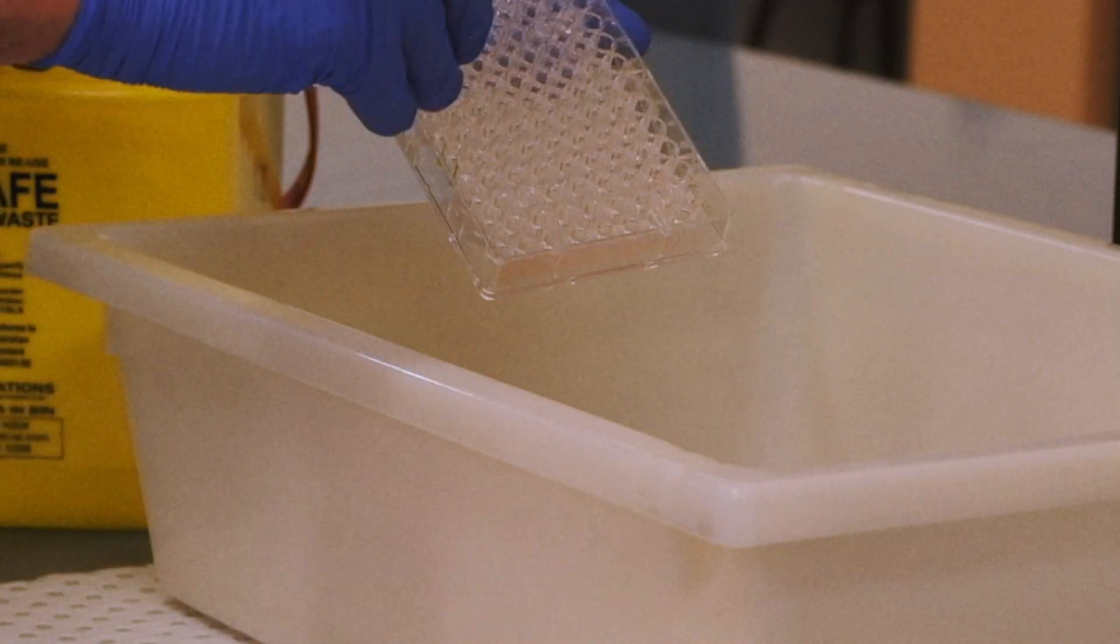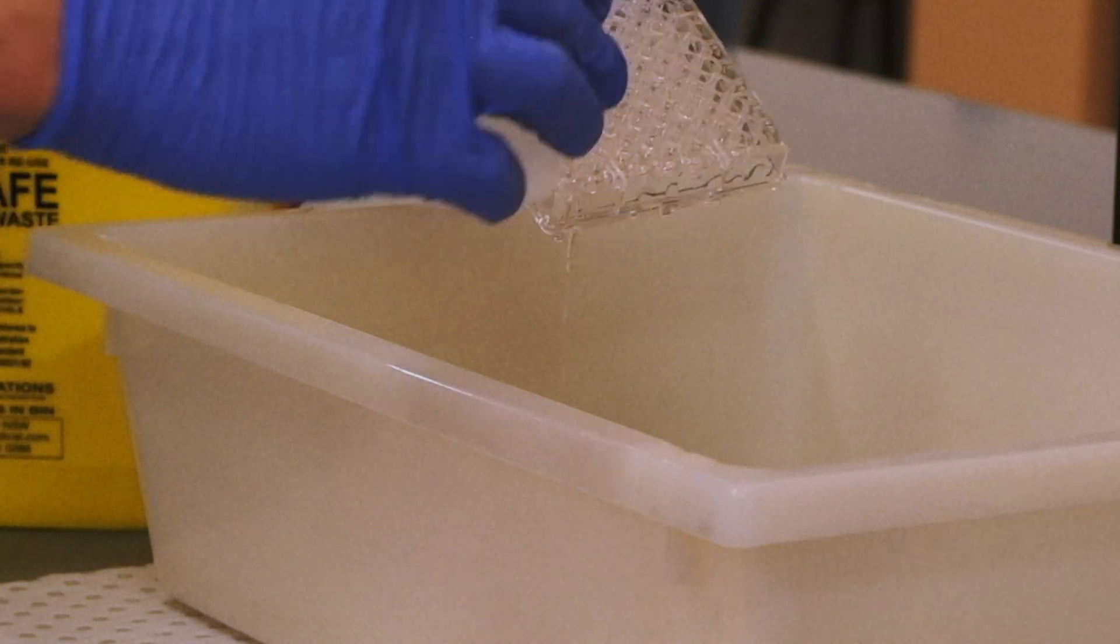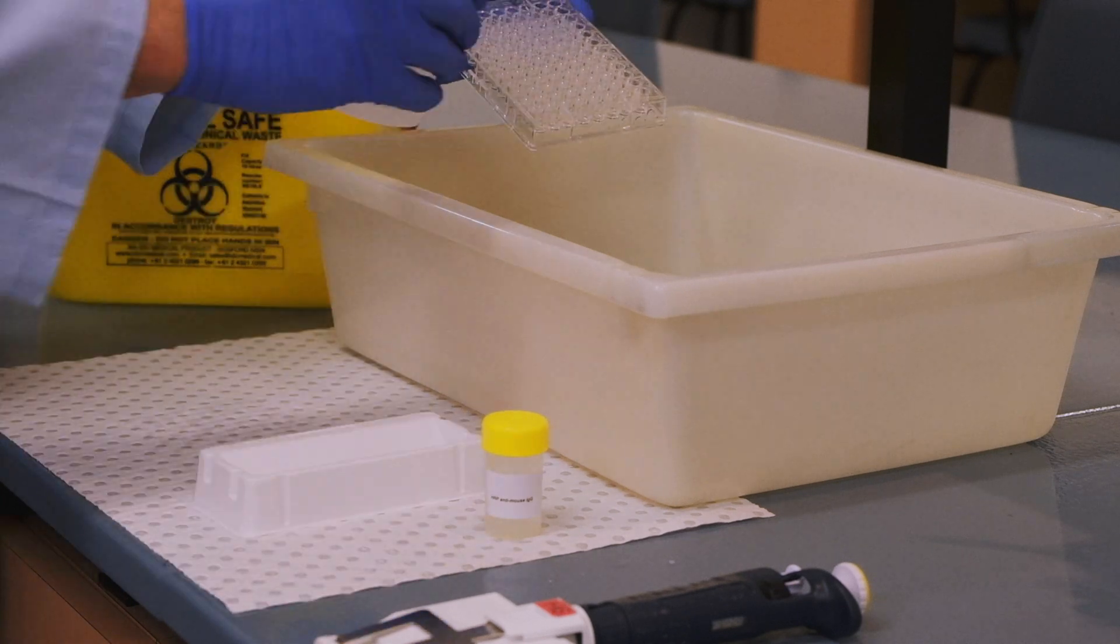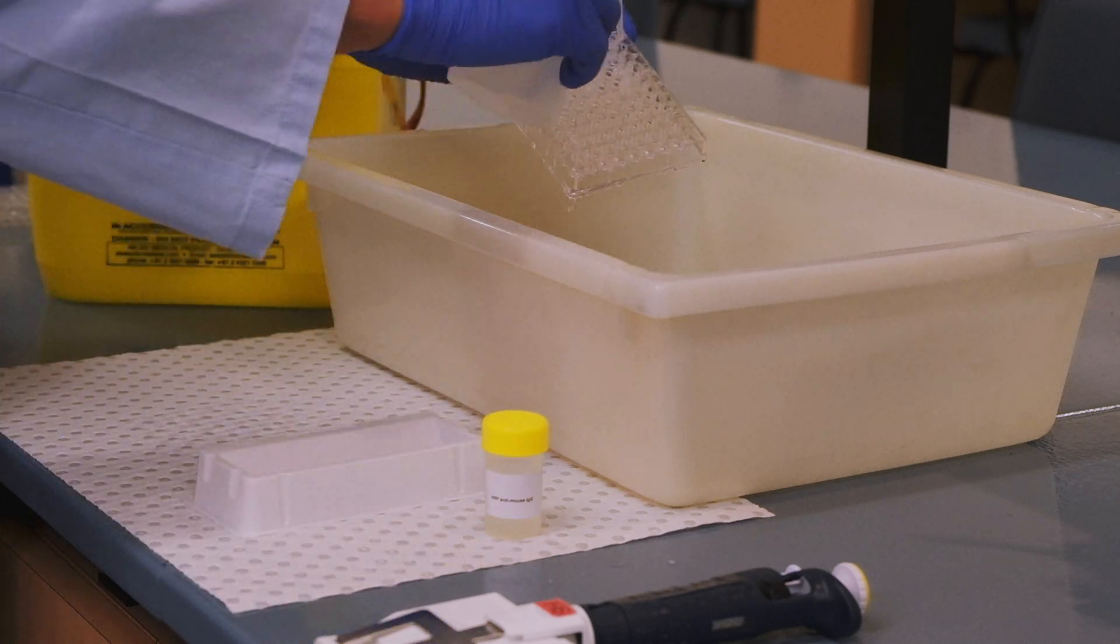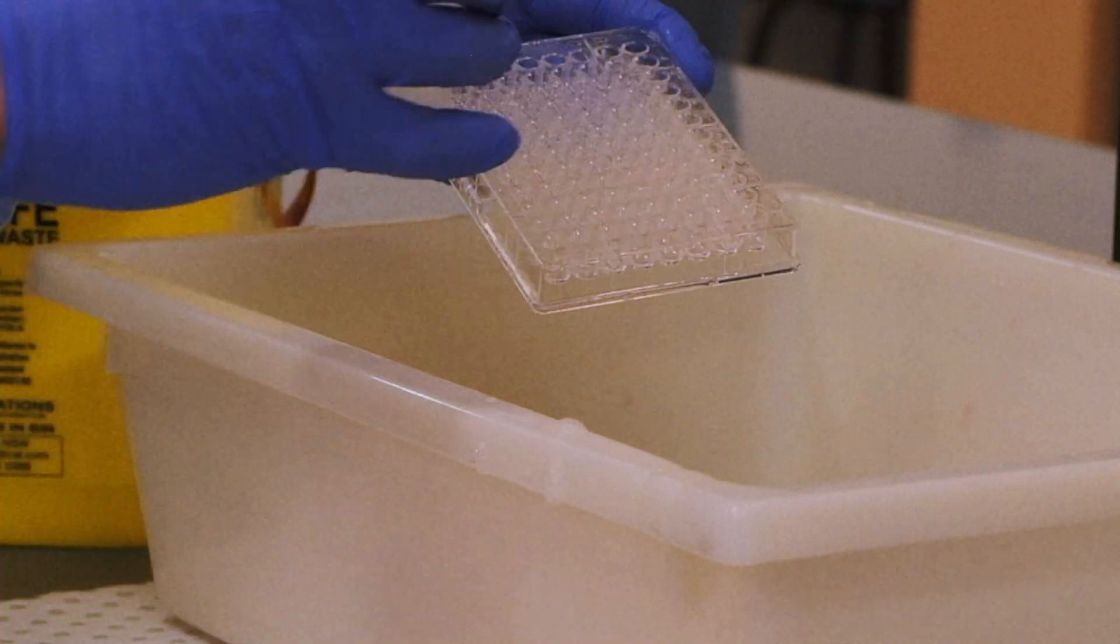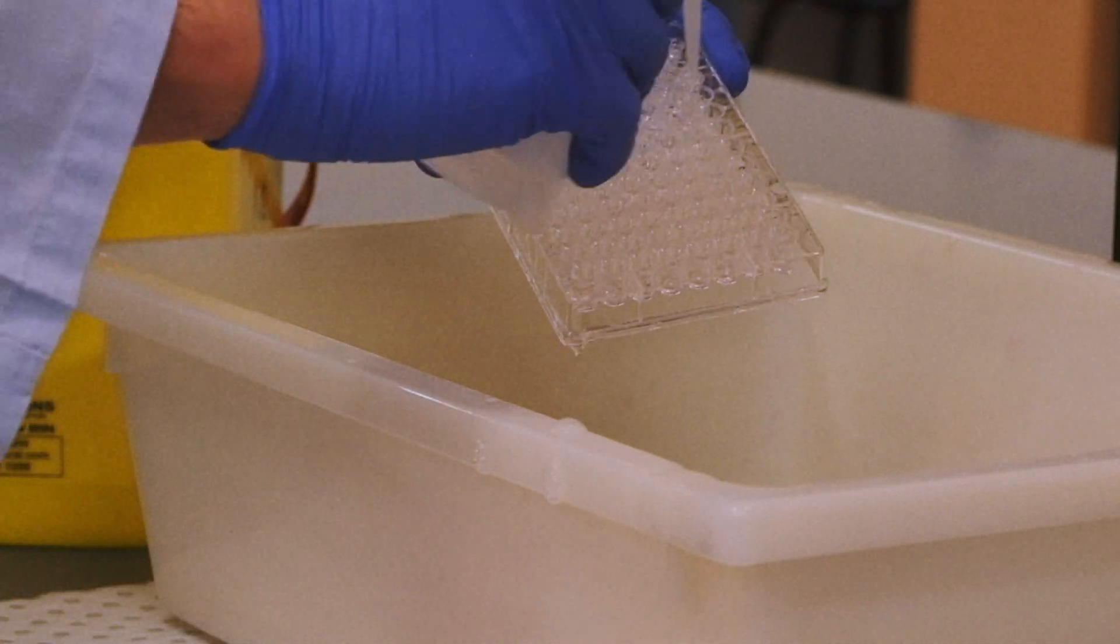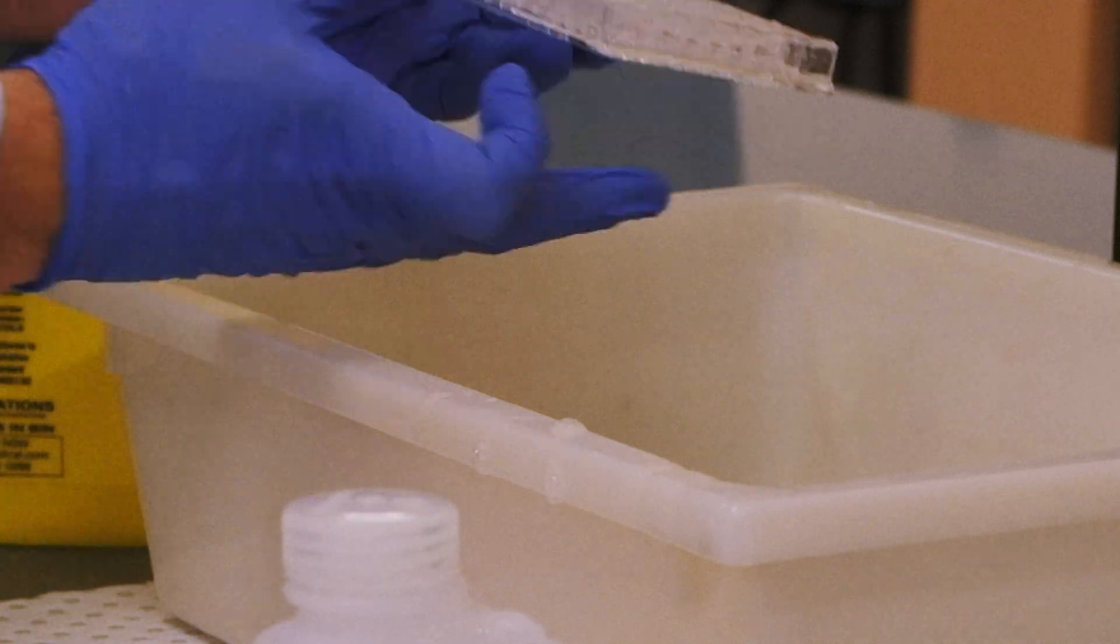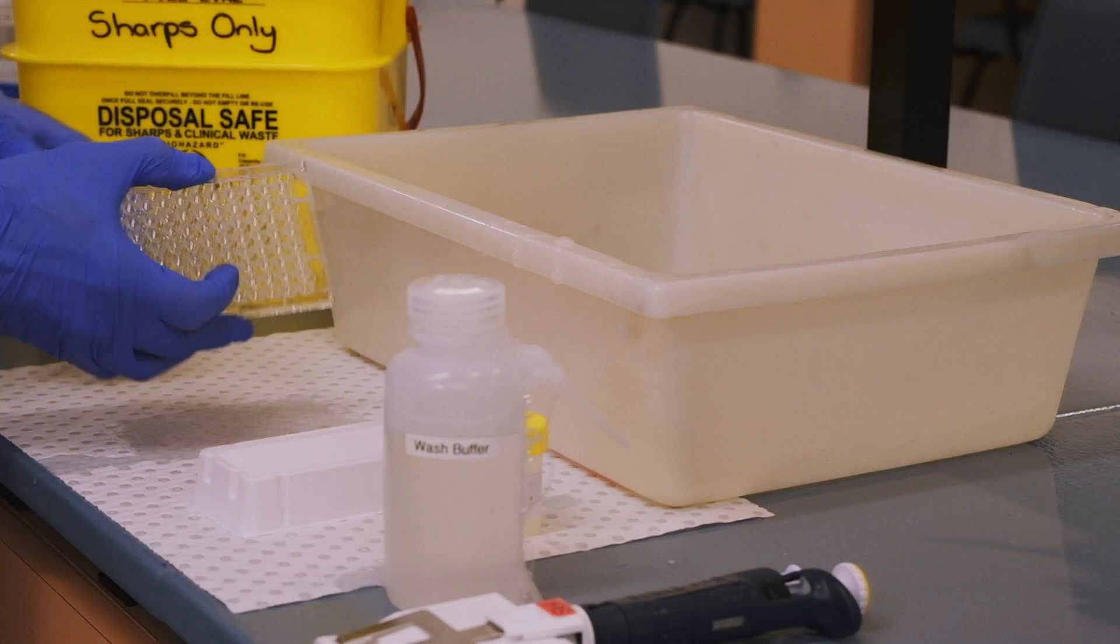To do this, flick the contents in the plate into the waste container and pour the washing buffer into the now empty plate. Make sure that all the wells are filled, give it a shake and flick it into the waste again. Repeat this process for a total of three washes. The reason for the washing is to remove unbound primary antibodies, which could otherwise result in false positive readings.